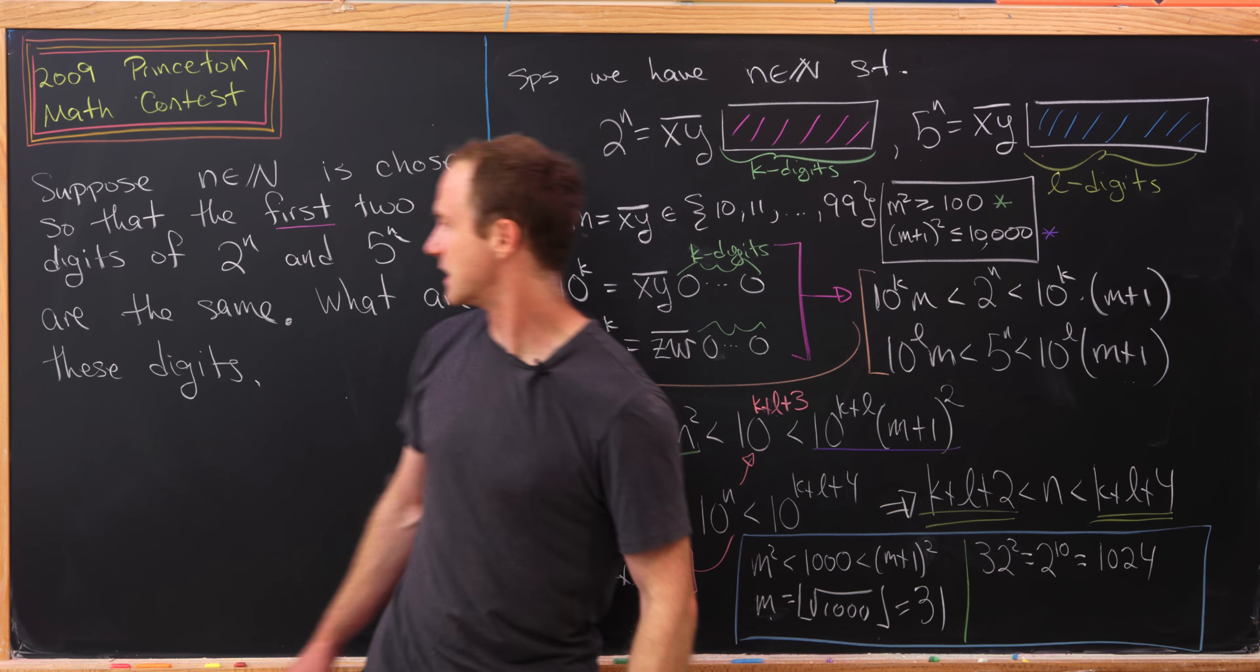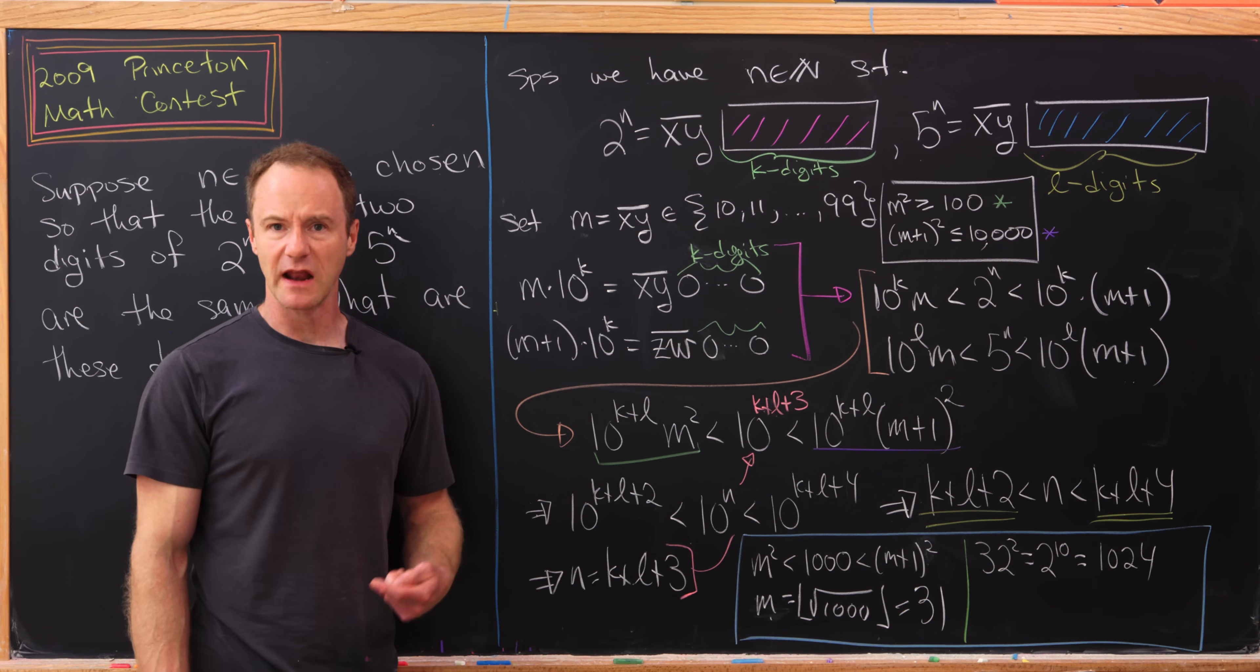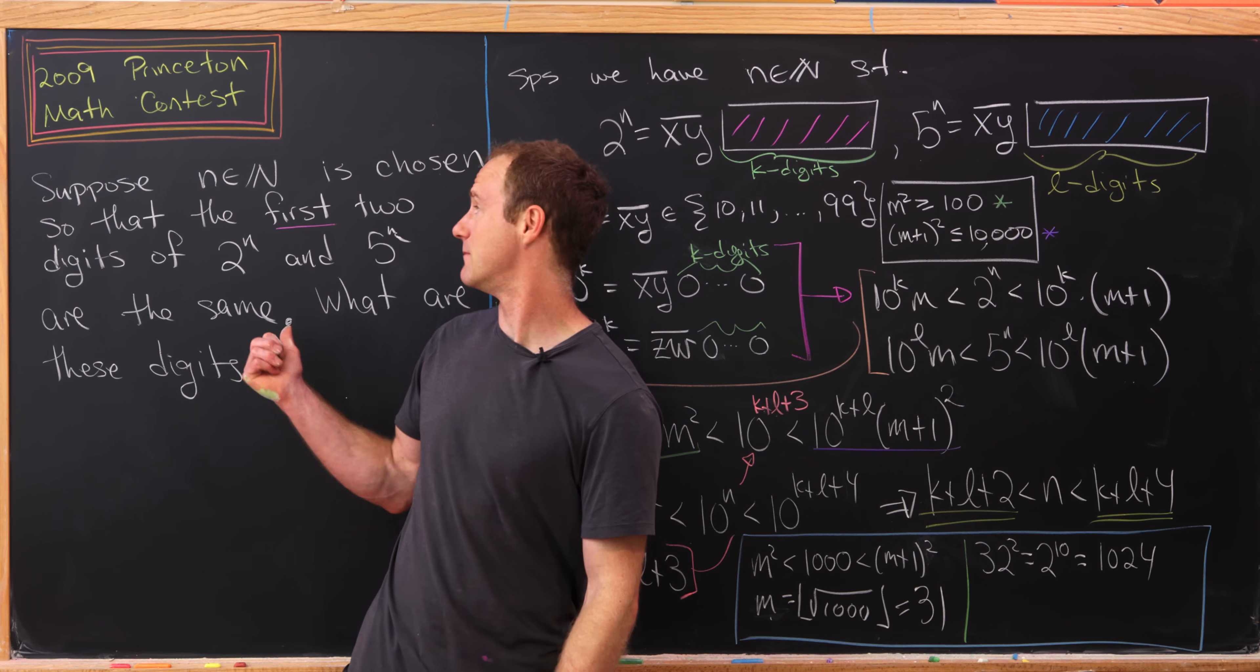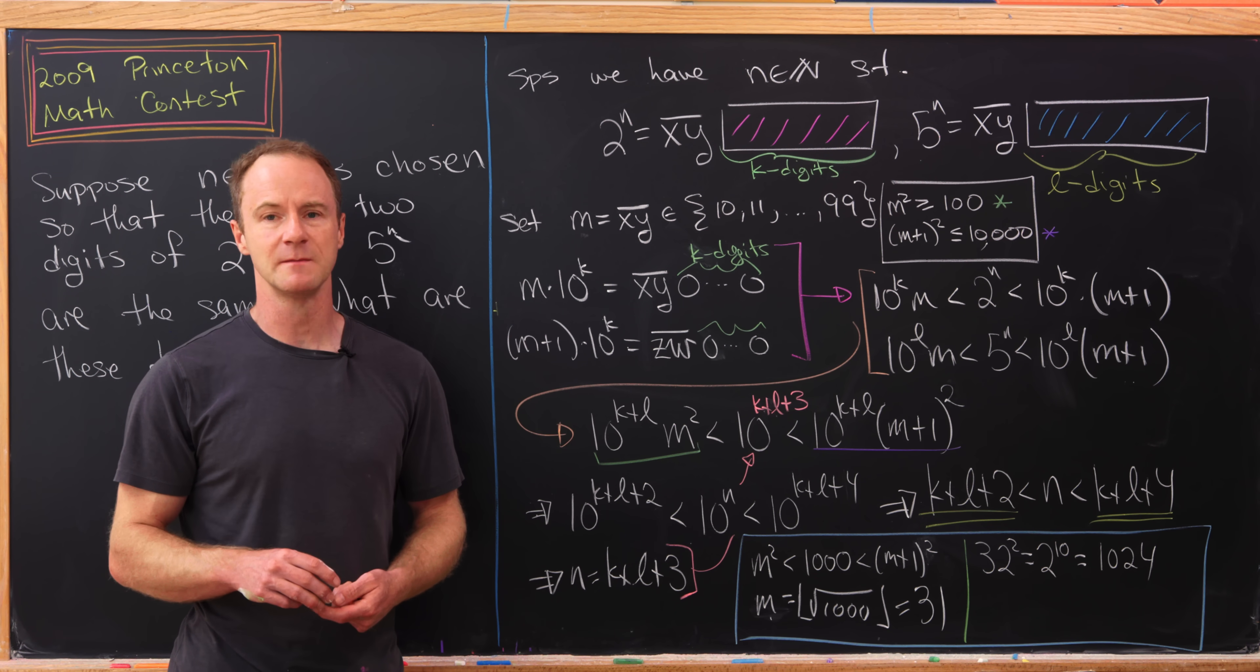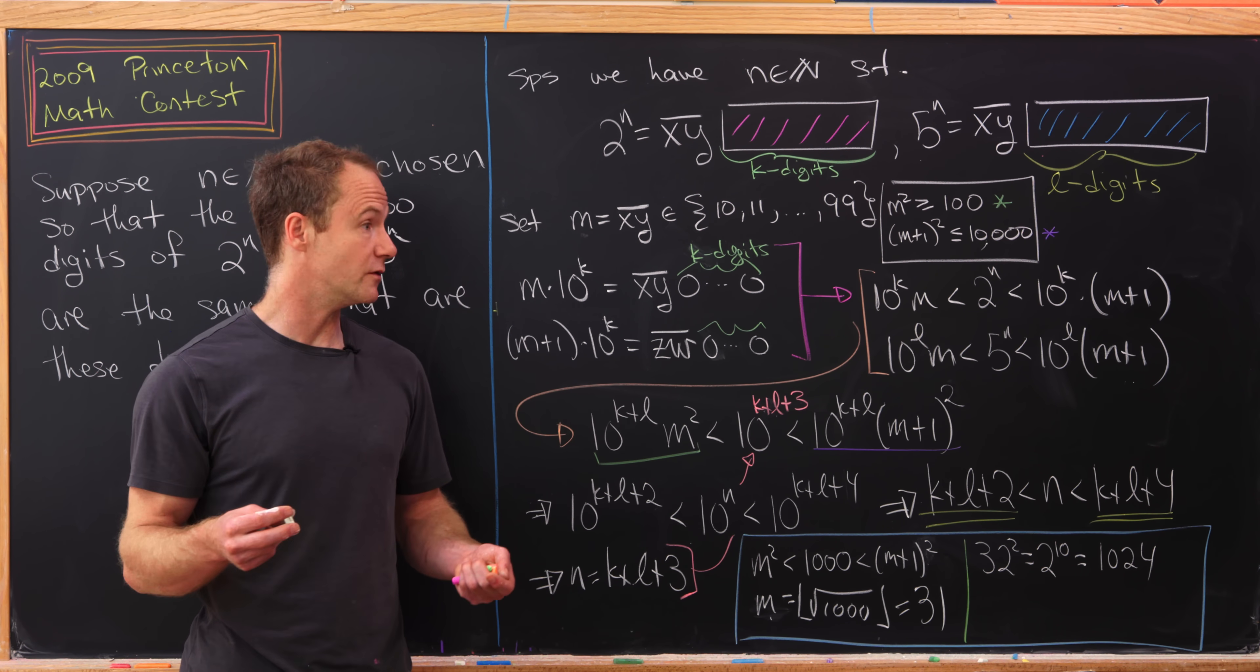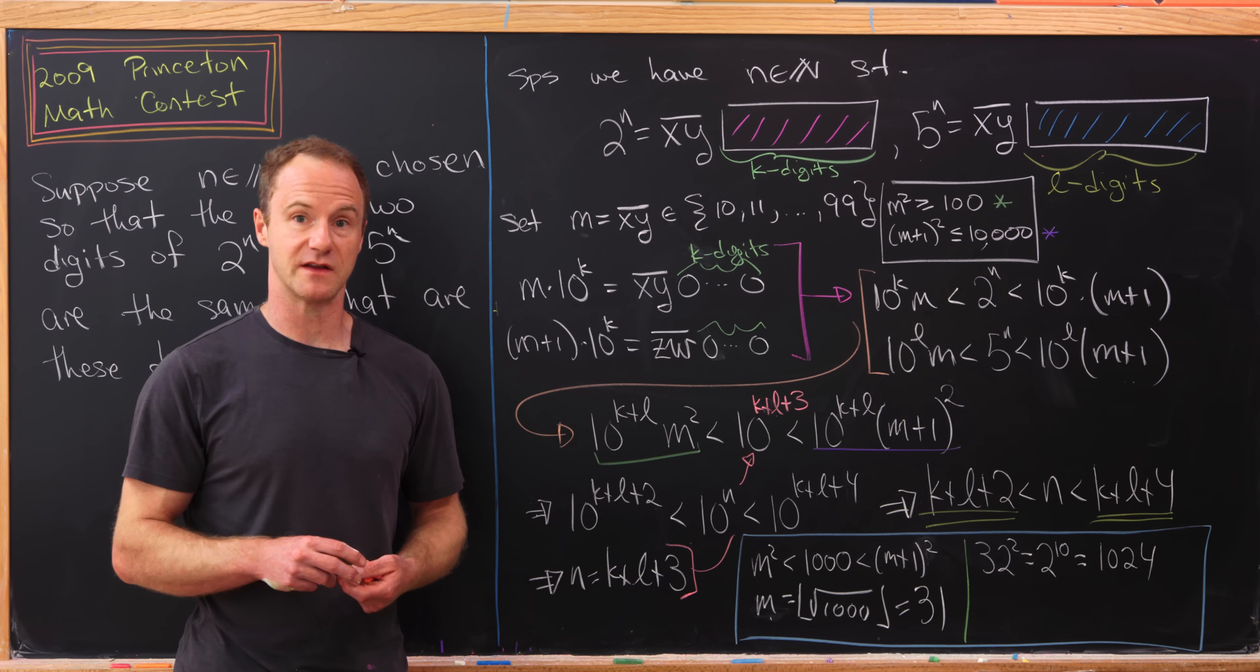So there we did it. We found these first two digits given this condition. We also had a nice starter open question about the structure of the n's that make this possible. Maybe post in the comments if you figure out some structure to those values of n, and maybe even more interestingly if we can prove that those indeed do generate all the n's that make this occur.